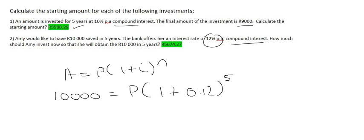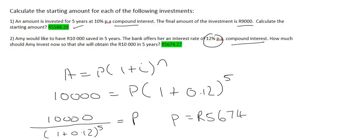To get P by itself, you divide the 10,000 by the whole bracket with the exponent of 5, type that in the calculator, and you'd get a final answer of 5,674 Rand and 27 cents.